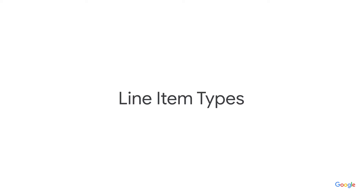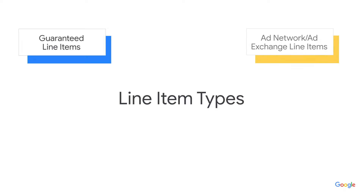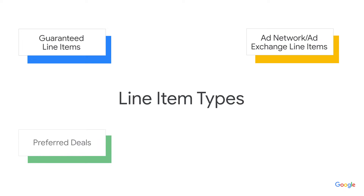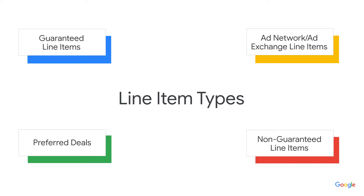Each line item has to specify a line item type, which guides the ad selection. It's important to note that there are many different line item types. When line items compete for an impression, the higher priority line item will win.